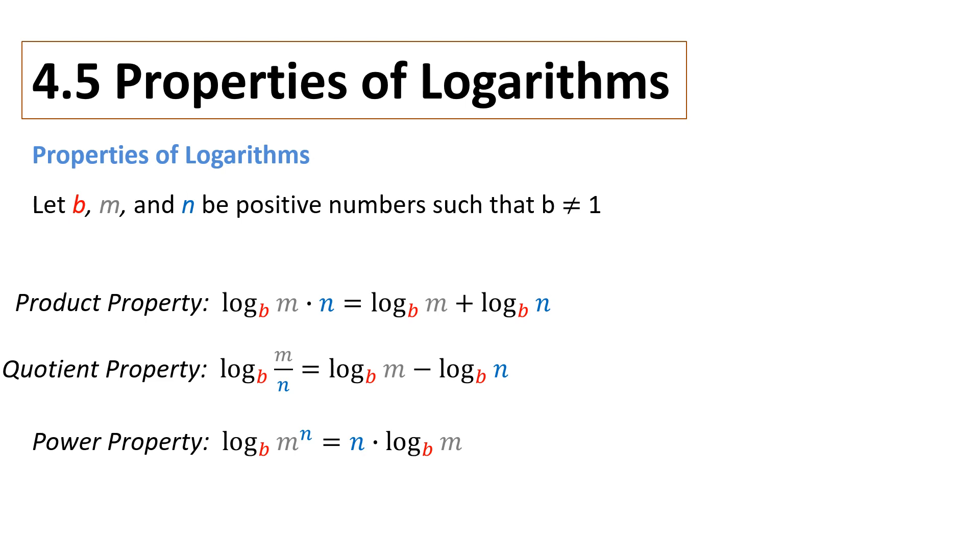Properties of logarithms. Let b, m, and n be positive numbers such that b cannot equal 1. We have three properties here. First, the product property is that if you have log base b of m times n, we could break it up into log base b of m plus log base b of n.